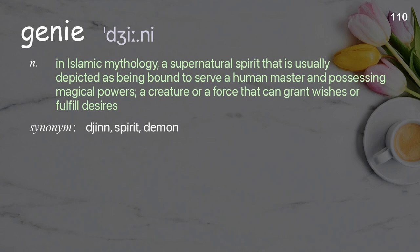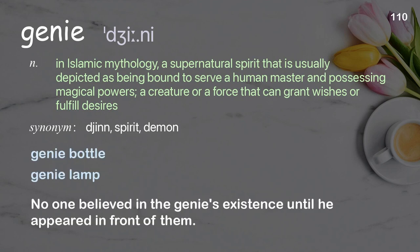Genie: in Islamic mythology, a supernatural spirit usually depicted as being bound to serve a human master and possessing magical powers; a creature or force that can grant wishes or fulfill desires. Examples: genie bottle, genie lamp. No one believed in the genie's existence until he appeared in front of them.